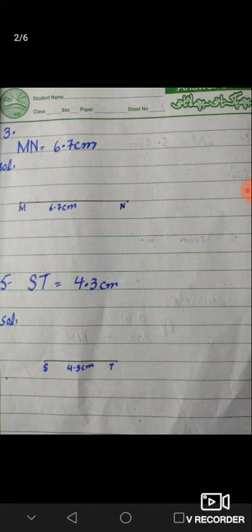So then MN, we have to draw the line. ST is given, 4.3 cm. We have to start from 0 and draw up to 4.3 cm. We have to draw the line in the same way.